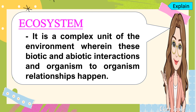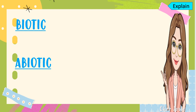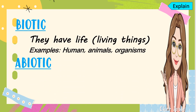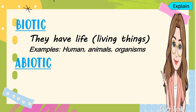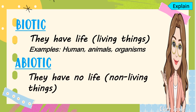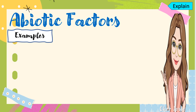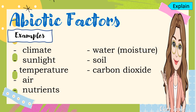Here are the different terms we can encounter in our lesson. The first one is ecosystem. An ecosystem is a complex unit of the environment wherein biotic and abiotic interactions and organism-to-organism relationships happen. Biotic refers to things that have life — the living things — such as humans, animals, and organisms. Abiotic refers to things that have no life — the non-living things — such as climate, sunlight, temperature, air, nutrients, water or moisture, soil, and carbon dioxide.